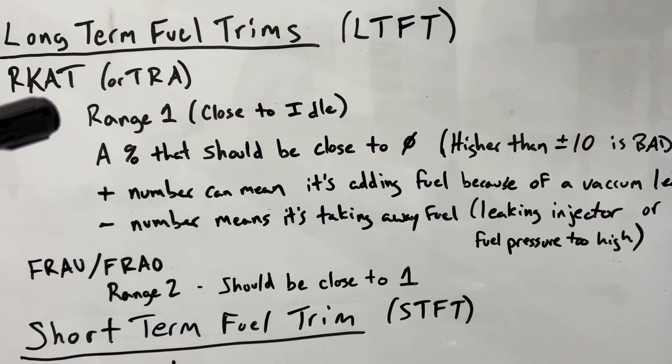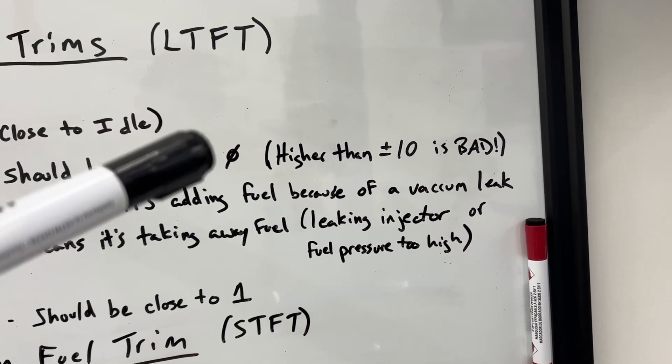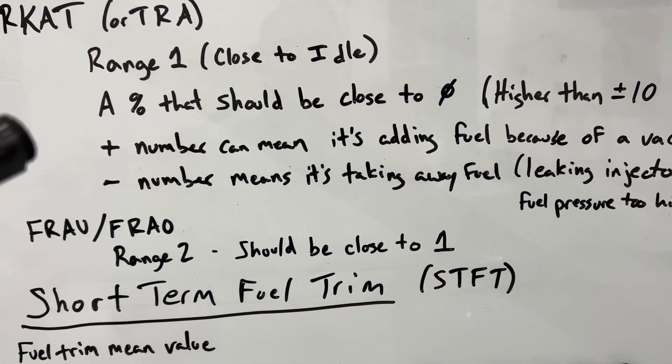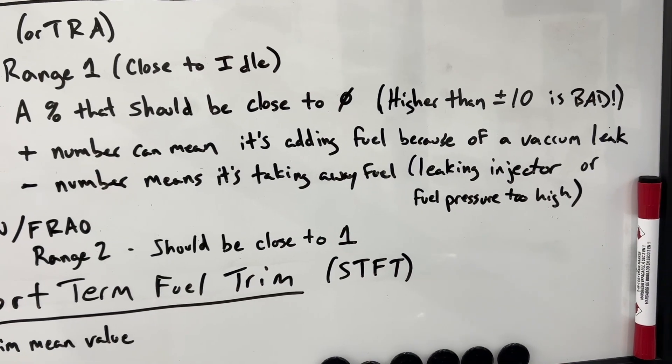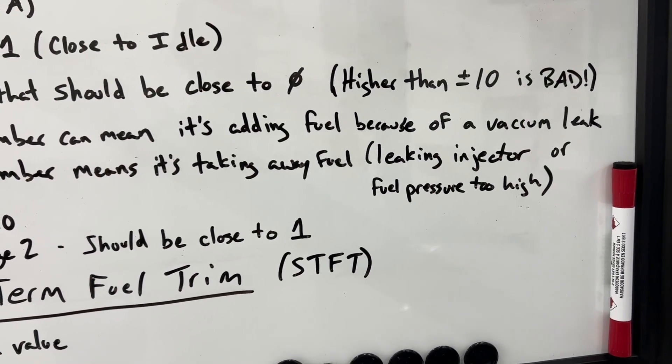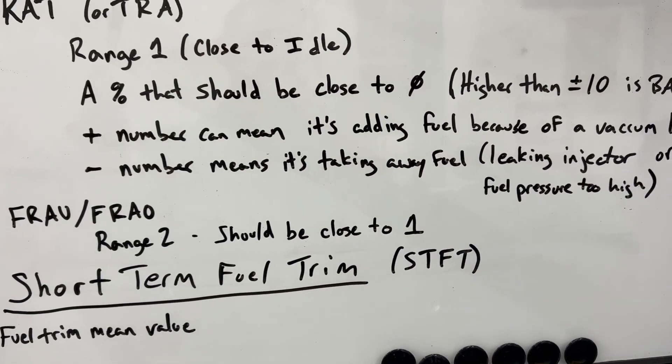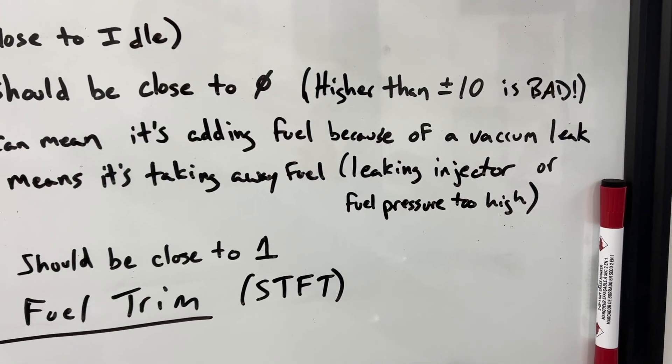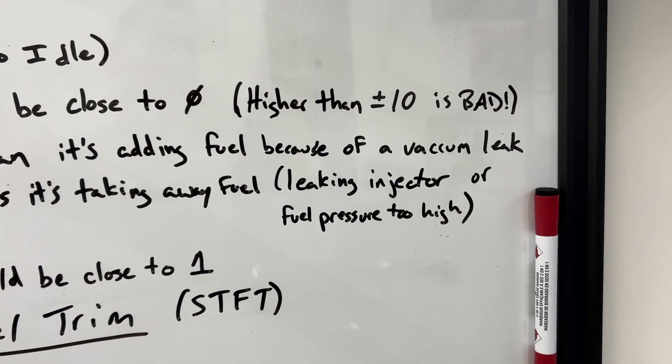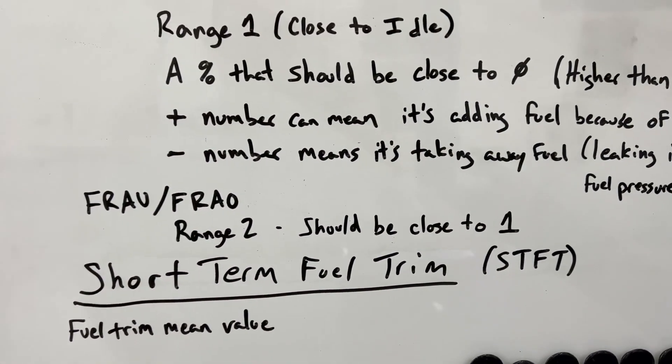The range one value that we'll see, it is a percentage and it should be close to zero. So if it goes any higher than plus or minus 10, bad, something's going on for sure. If you have a positive number, that means that it is adding fuel because of possibly a vacuum leak, or I don't know, maybe there are other reasons that it does that, but that's the one I know about. If it is a negative number, that means that it's taking away fuel, and that can happen if you have a leaking injector that is adding more fuel than it knows about, so it needs to take away when it's spraying in, or if your fuel pressure is too high.